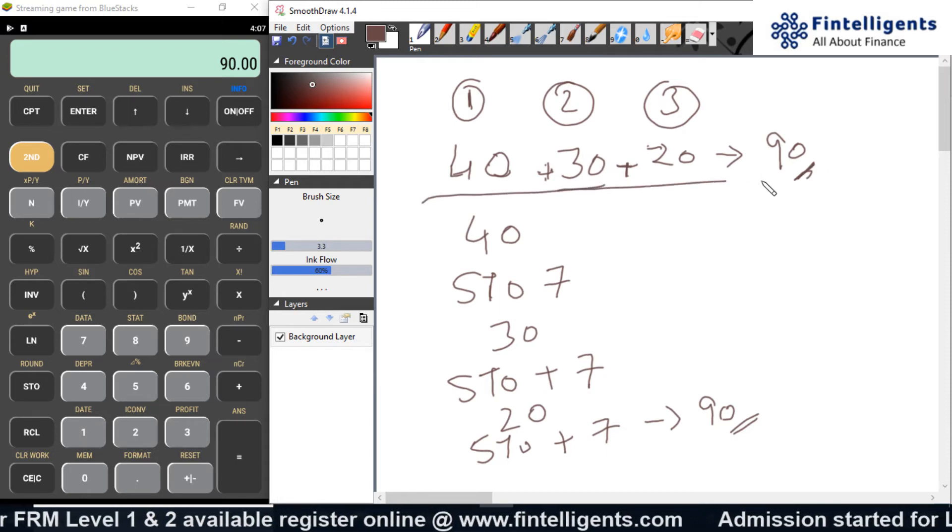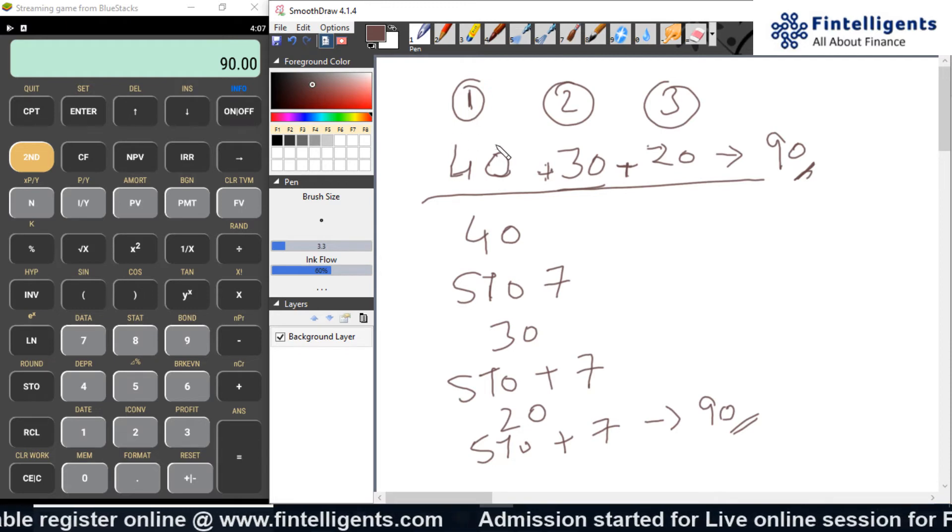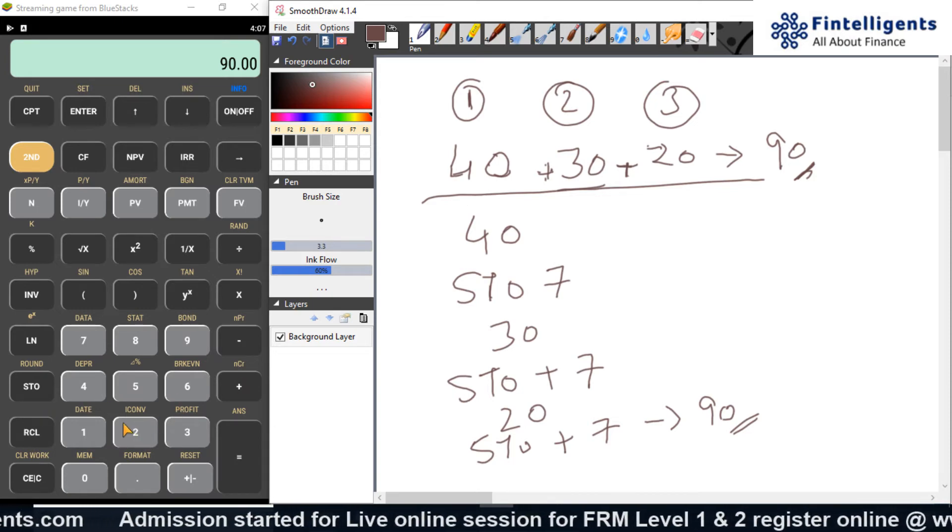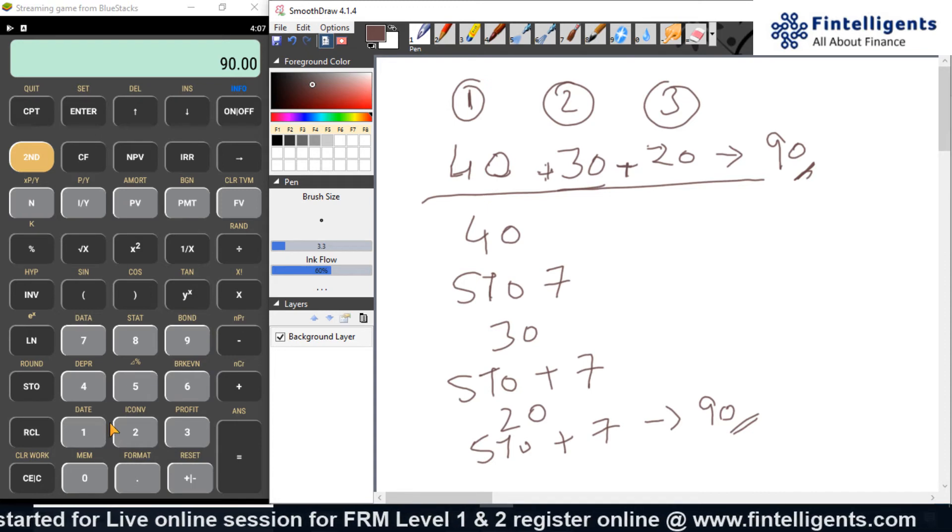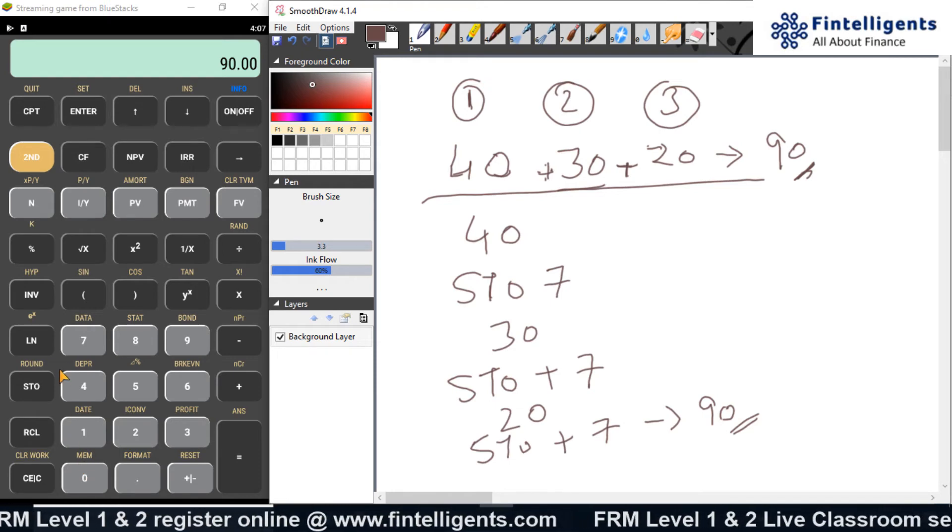That was similar to our earlier answer. So, there is two methods to solve this type of sum. You keep on saving your calculation into different numbers. And then recall each one of them and add. But that will waste a lot of your memory because if suppose you are doing a complex bond evaluation,